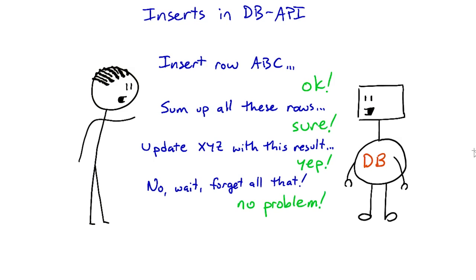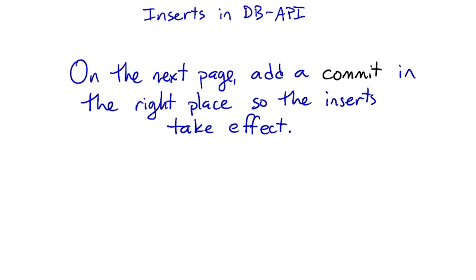If we close the connection without committing, our changes will get rolled back. On the next page, there's some Python code that tries to insert a row into a table, but it doesn't commit. It then reconnects and tries to find that row, but that row has been rolled back. Try running the code as it is, and then add the commit call in the right place to make the changes get saved.